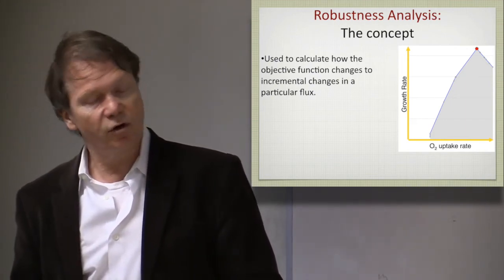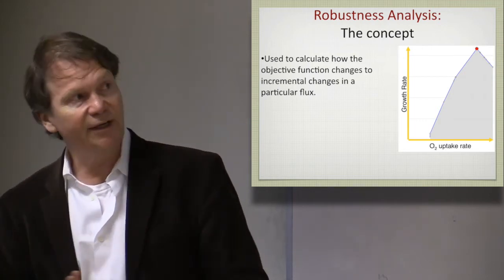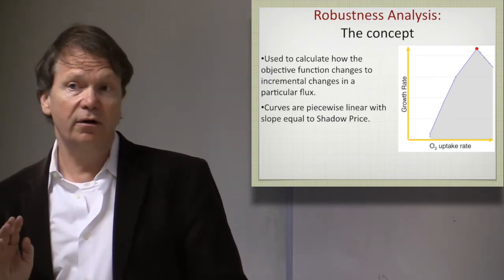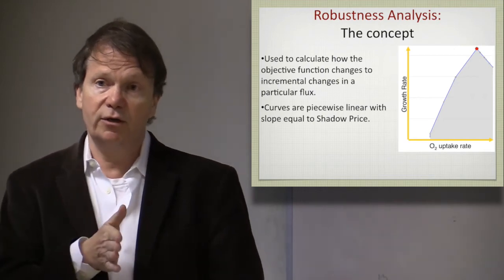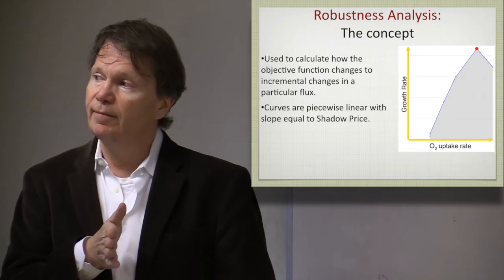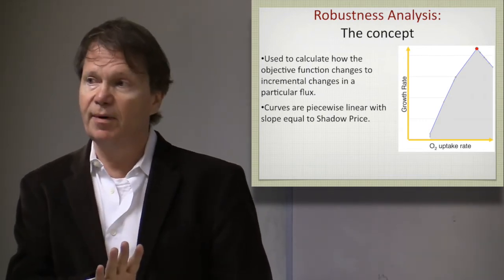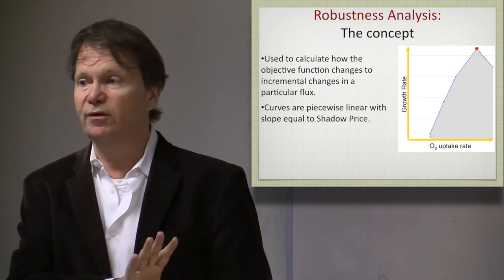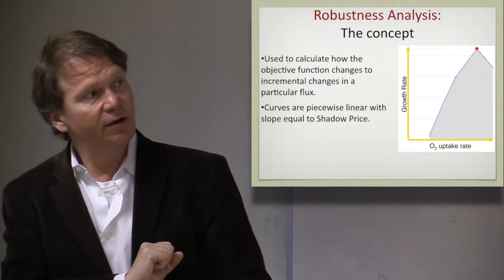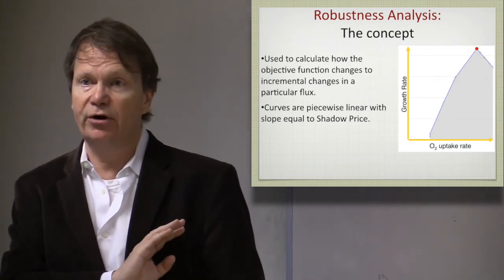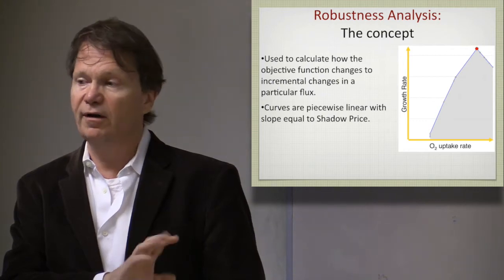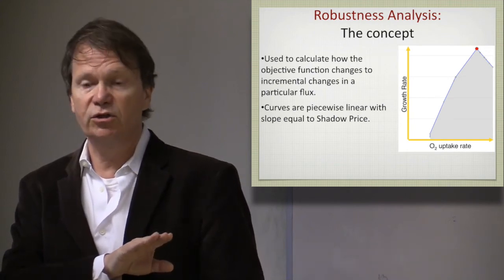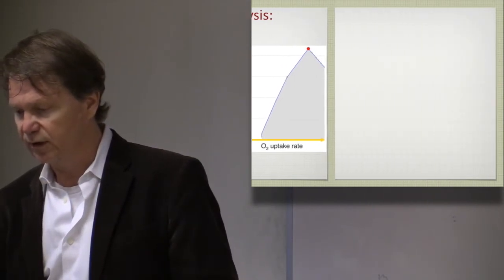You may trace out a curve that has a single optimum, which would be predictive of the optimal oxygen uptake rate of an organism. The shadow prices are the sensitivity of the objective function with respect to a boundary flux, and here we are directly varying a boundary flux, so the slope of that curve is simply the derivative of the objective function with respect to that boundary flux. The curve is piecewise linear, so there are ranges where the shadow price is always the same, and then there's a kink in the curve where the shadow price changes.